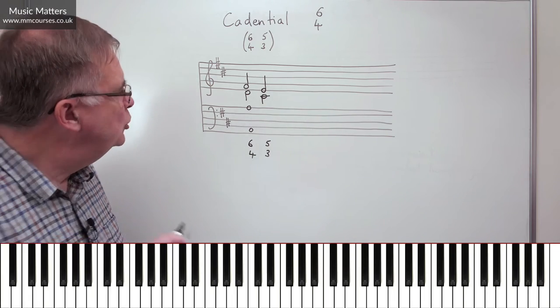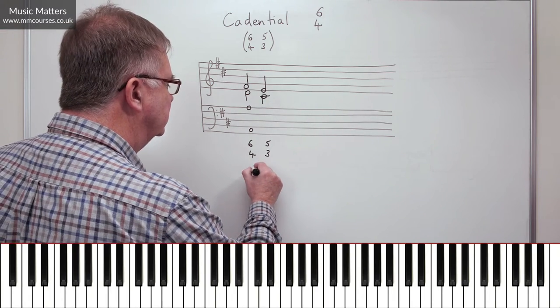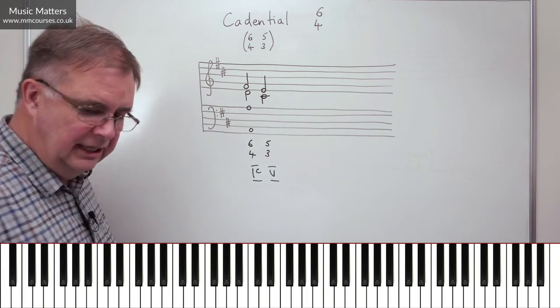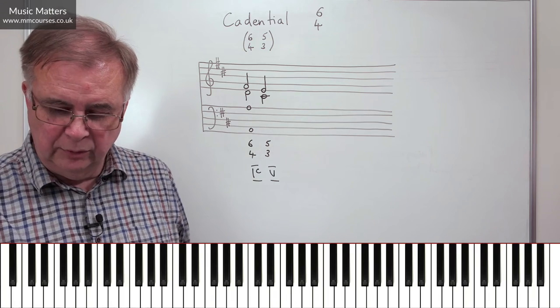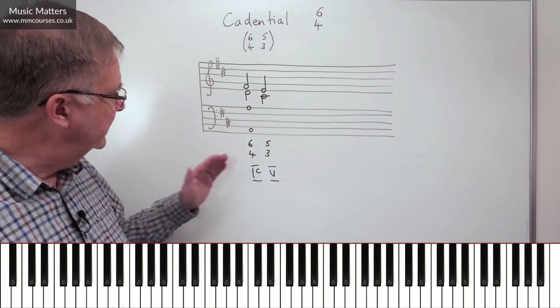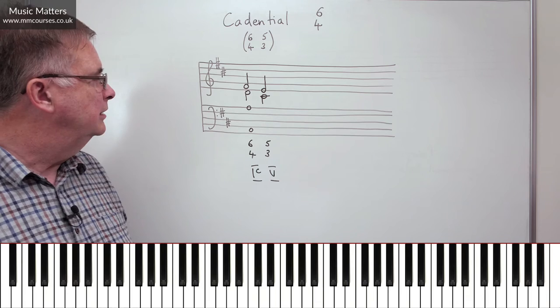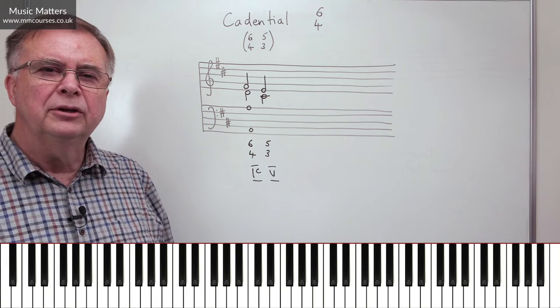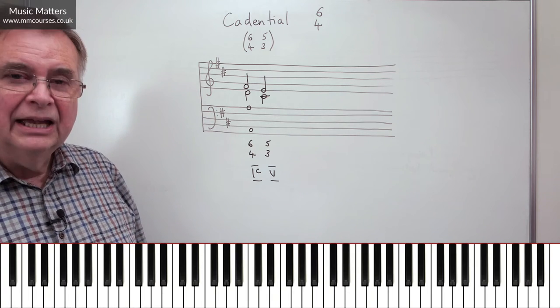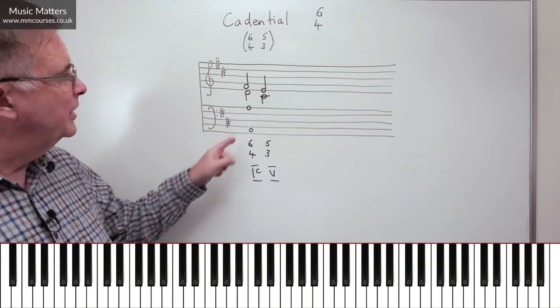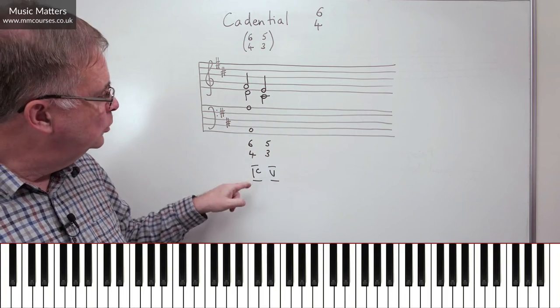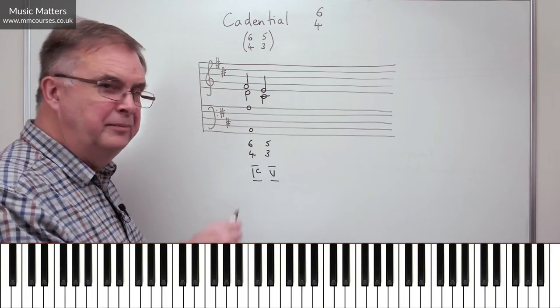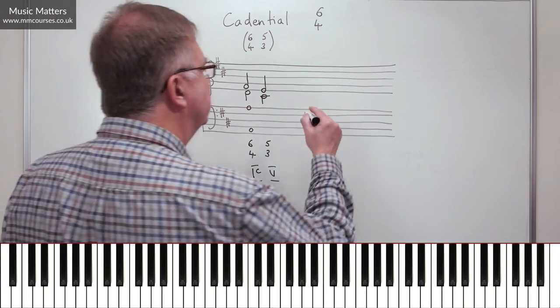Now if I wanted to put that in Roman numerals, it would look like this, it's I6-4 followed by V. Okay, so for people who are much more familiar with Roman numerals, which I suspect is most people, that's what you're talking about, I6-4 followed by V. So does it have to be I6-4 followed by V? Well no it doesn't, and there's another one that is almost as common as that. I'd have to say that I6-4 followed by V is the most commonly found cadential 6-4, but I'm now going to talk about the other one, and it's this.